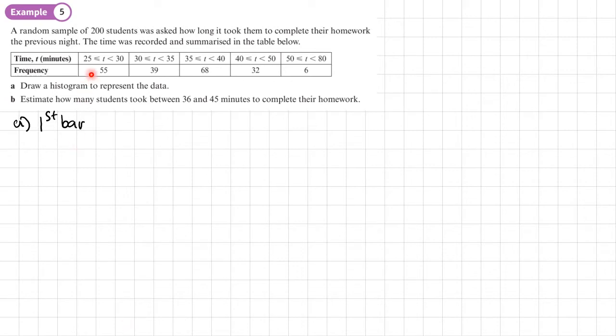So we'll start with the first bar here. The first bar has a frequency of 55 and a width of 5. So you just do 55 divided by 5. So the first bar is going to have a height of 11. The second bar has a frequency of 39. That also has a width of 5. That gives us 7.8.